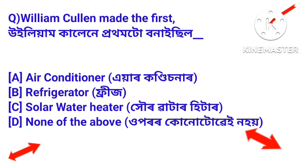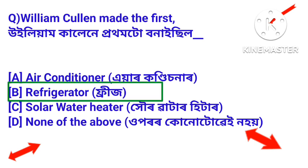William Cullen made the first refrigerator — William Calene prathame banaisil refrigerator. William Calene prathame refrigerator, that is fridge, banaisil.